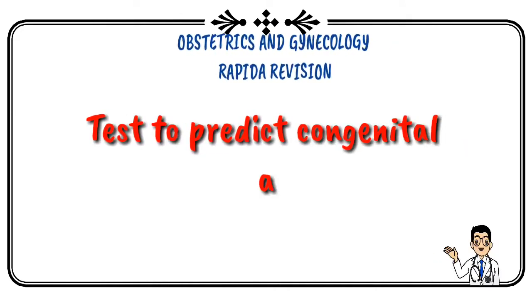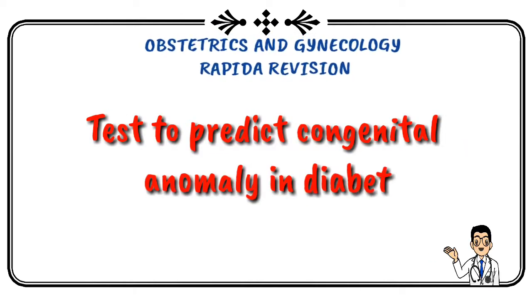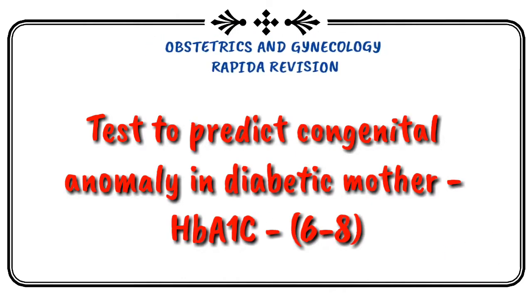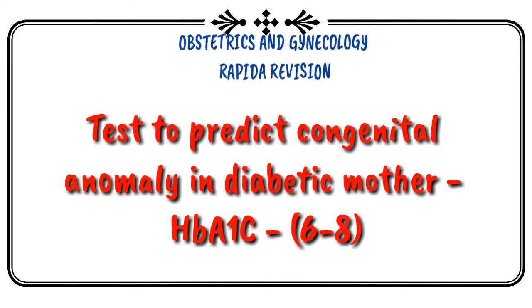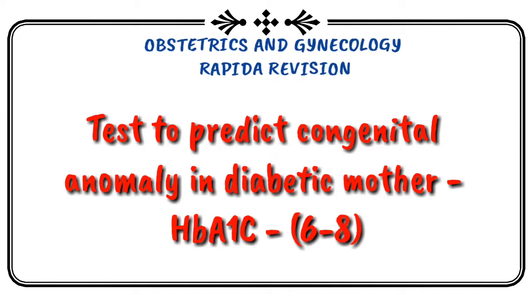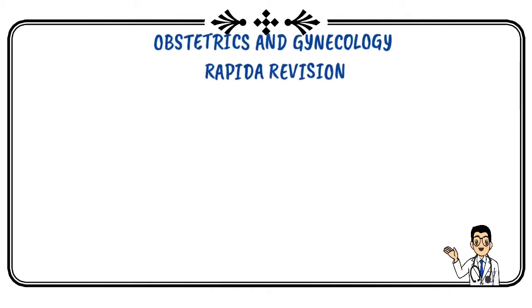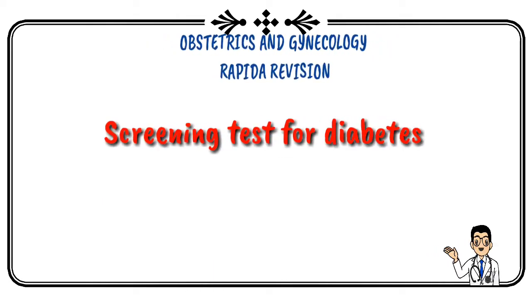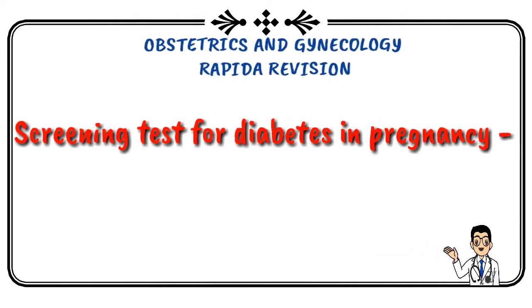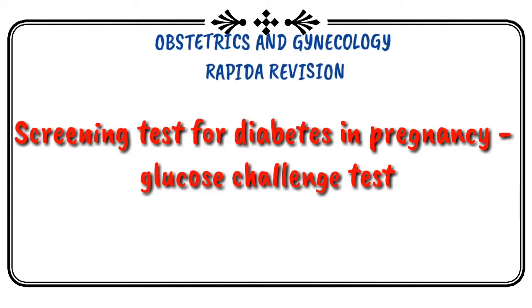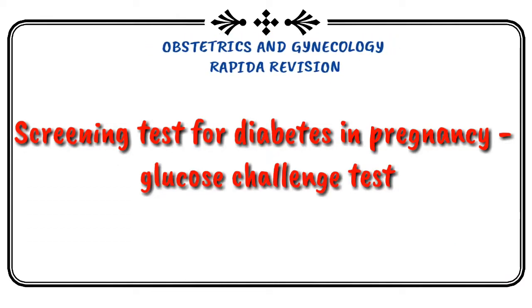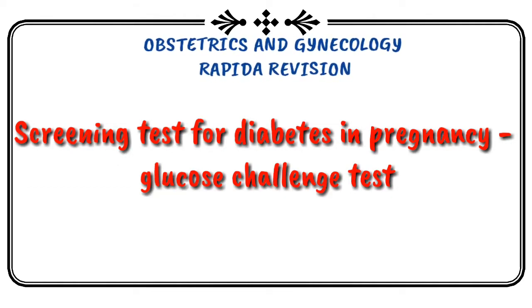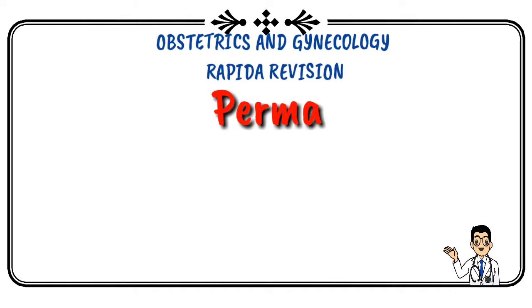Test to predict congenital anomaly in a diabetic mother is HbA1c. Screening test for diabetes in pregnancy is the glucose challenge test.